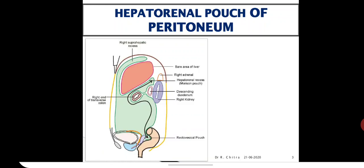Why should we know about the Hepatorenal Pouch? In the recumbent supine position, the Hepatorenal Pouch and the Recto-uterine Pouch in females — or the Recto-vesicle Pouch in males — are the most dependent parts of the peritoneal cavity, and the pelvic brim acts as a plane of watershed. After an abdominal operation, the patient is customarily placed in the propped-up position to encourage gravitation of peritoneal fluid into the pelvic cavity, so that absorption of infected fluid will be less.